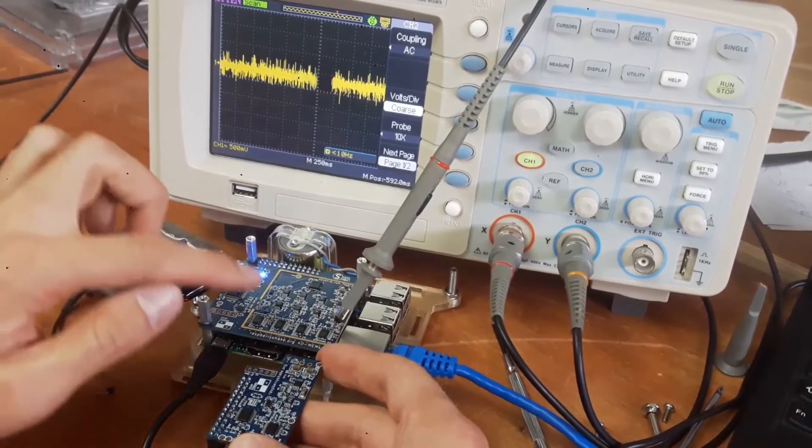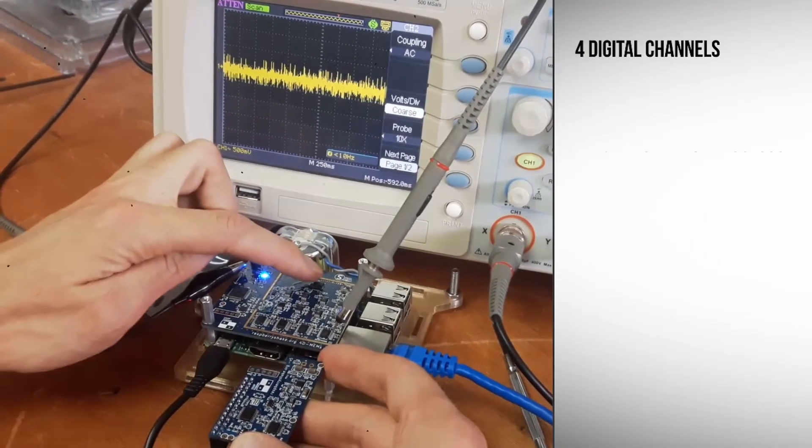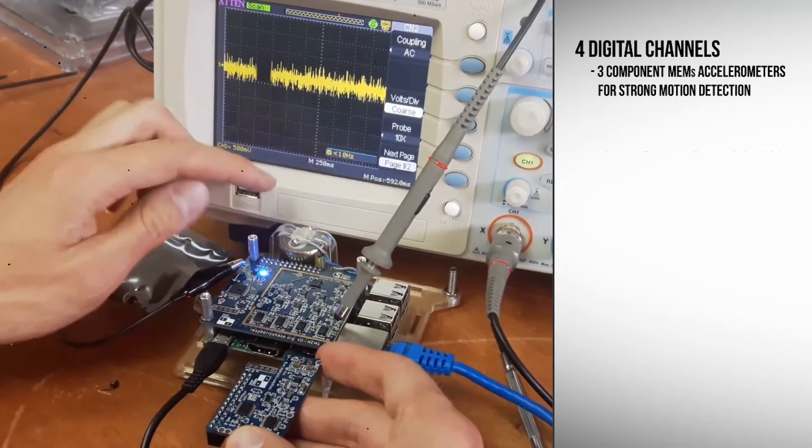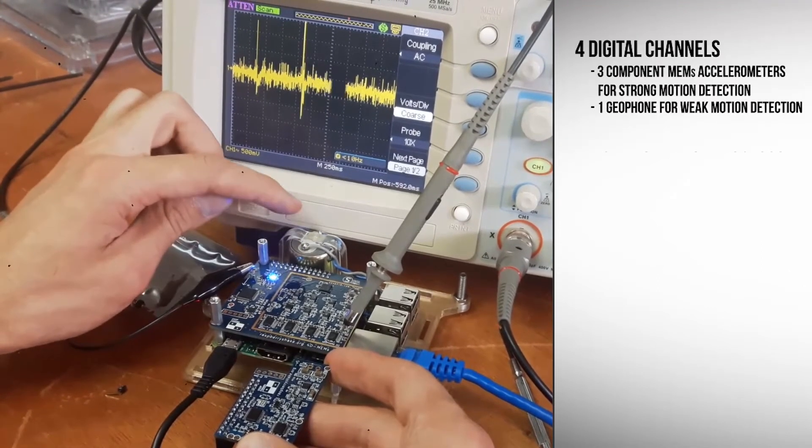With the new Raspberry Shake 4D, you get four times the number of sensors, including a three-component MEMS accelerometer that measures strong motion, and the original weak motion sensor, the geophone.